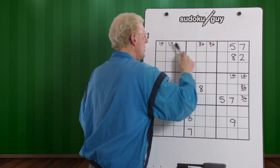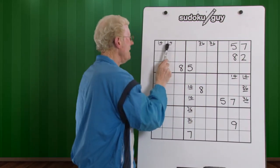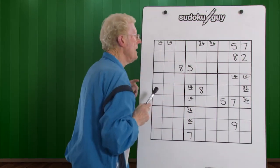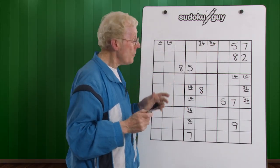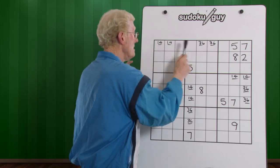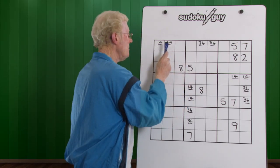In this top row here, we have two matching pairs. Here, and here. Therefore, we have three empty cells that we have to fill in. We don't have to worry about these, because they're already spoken for.